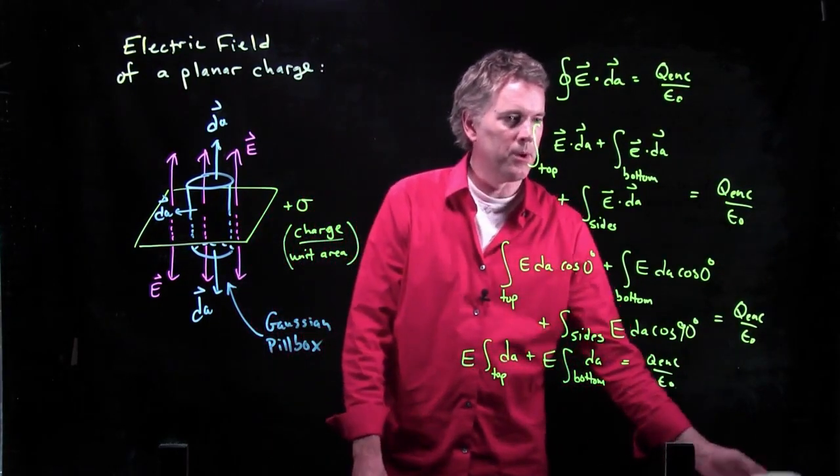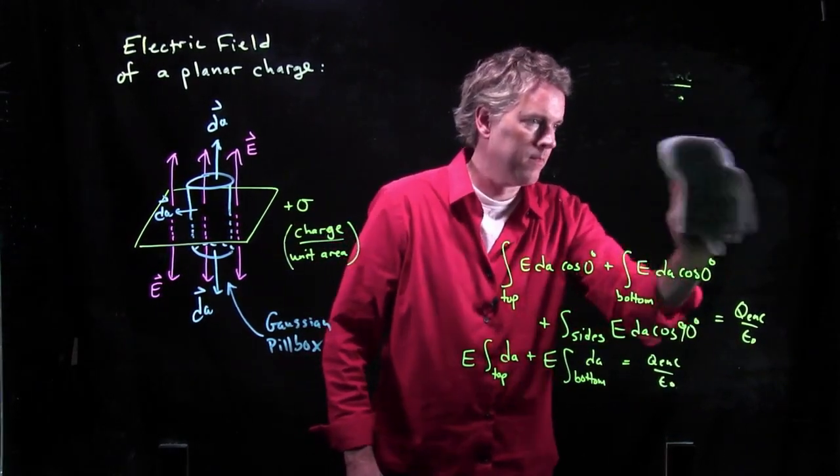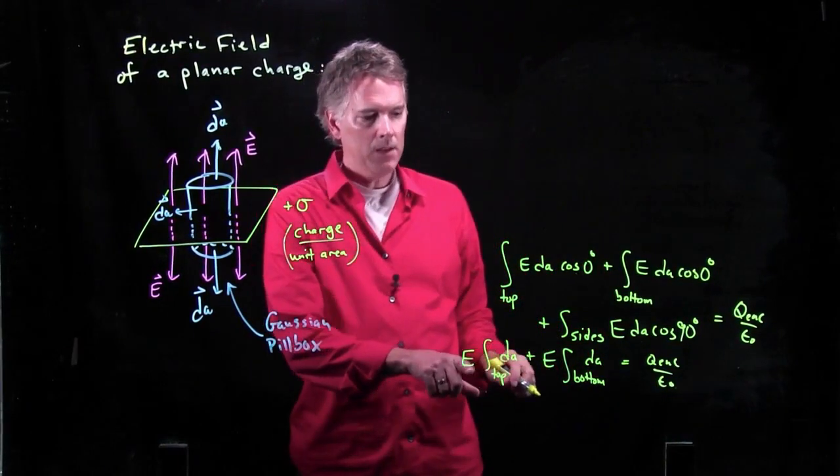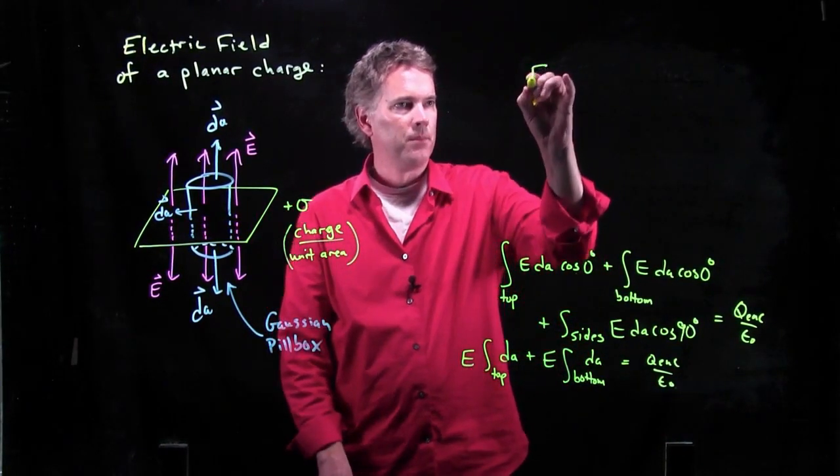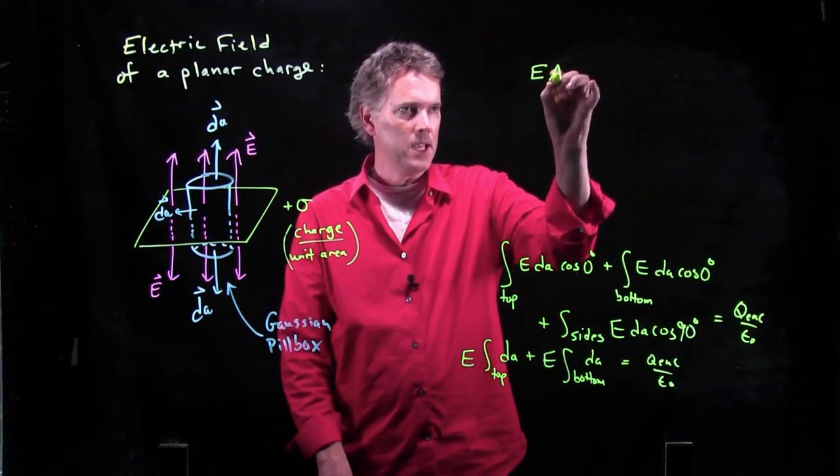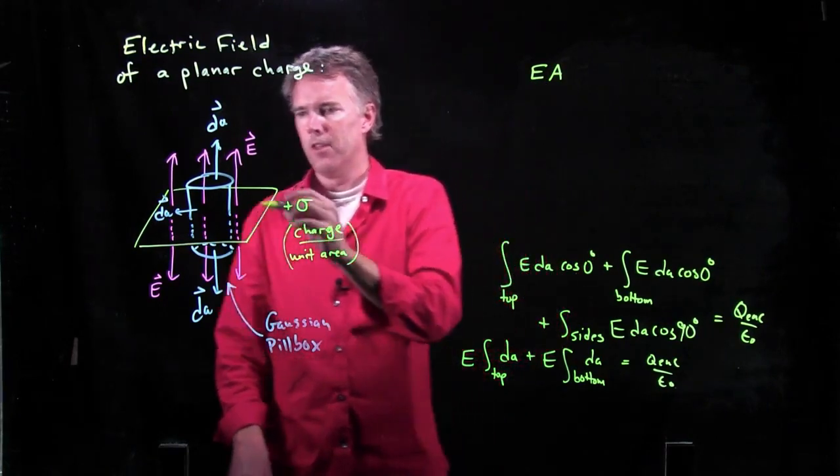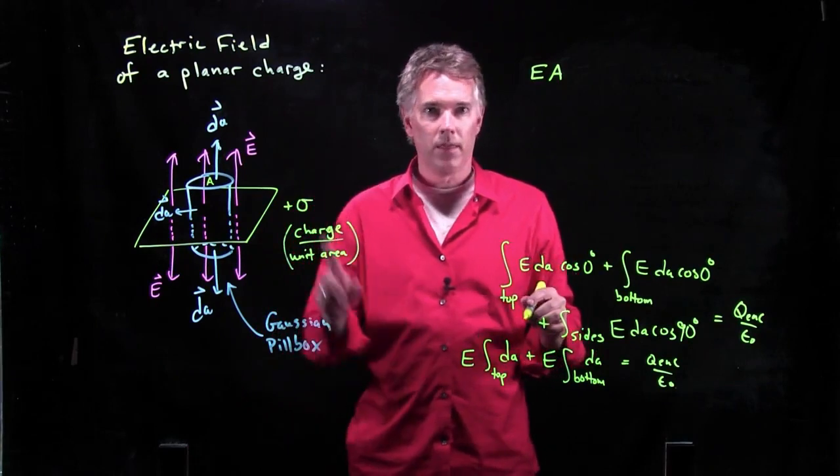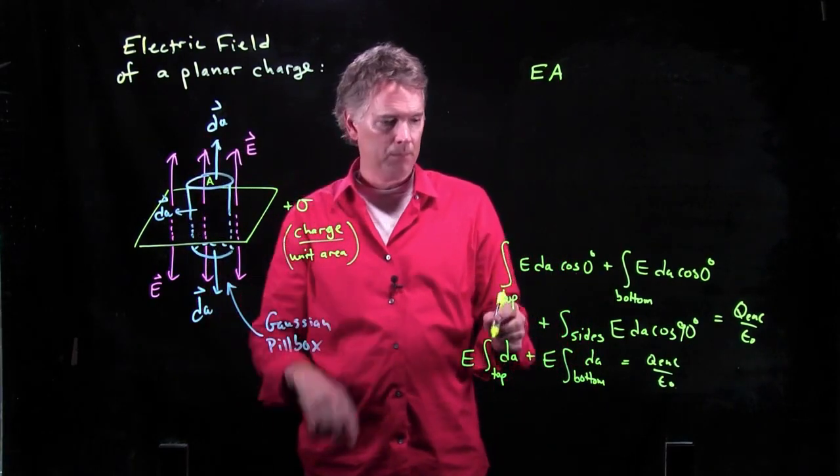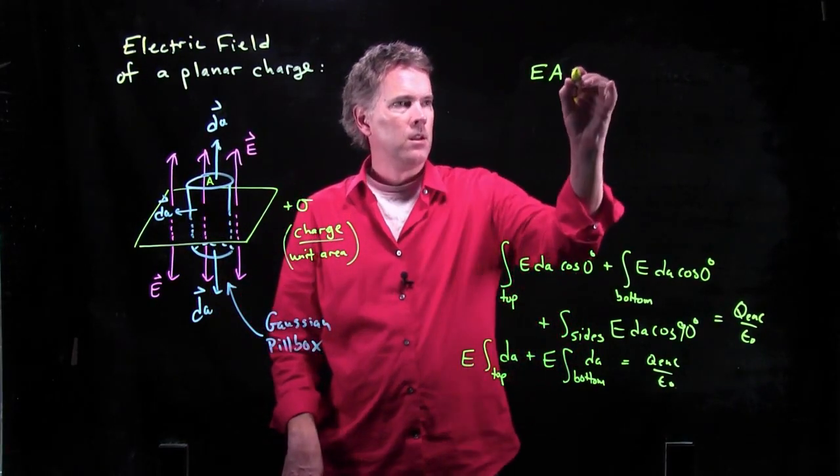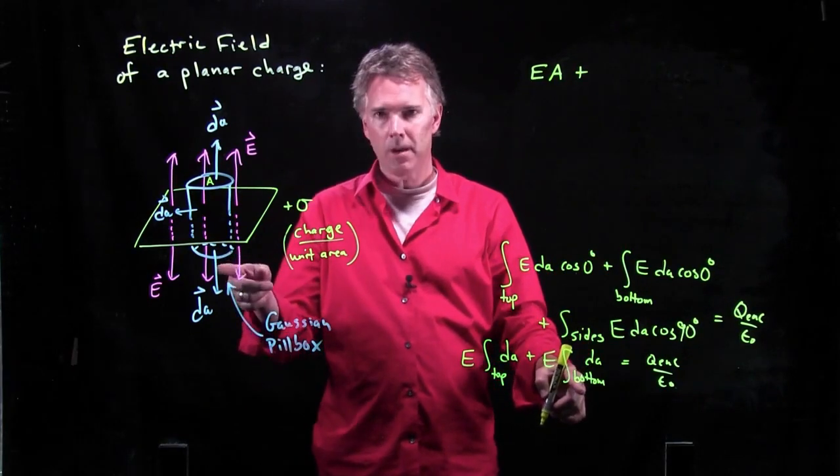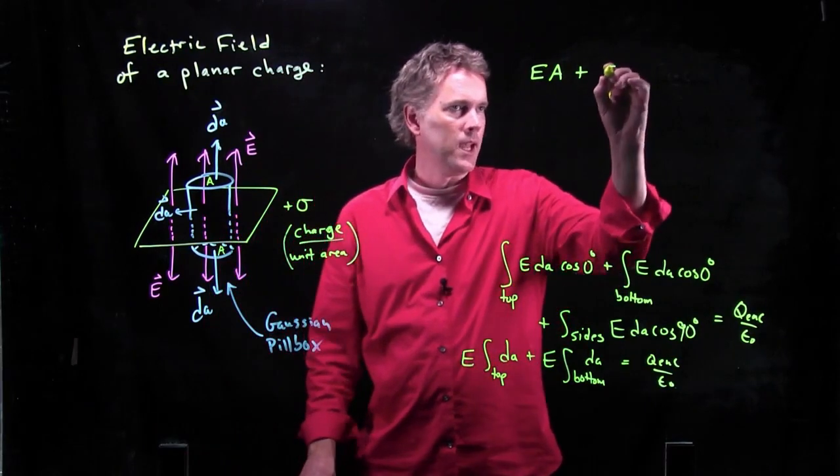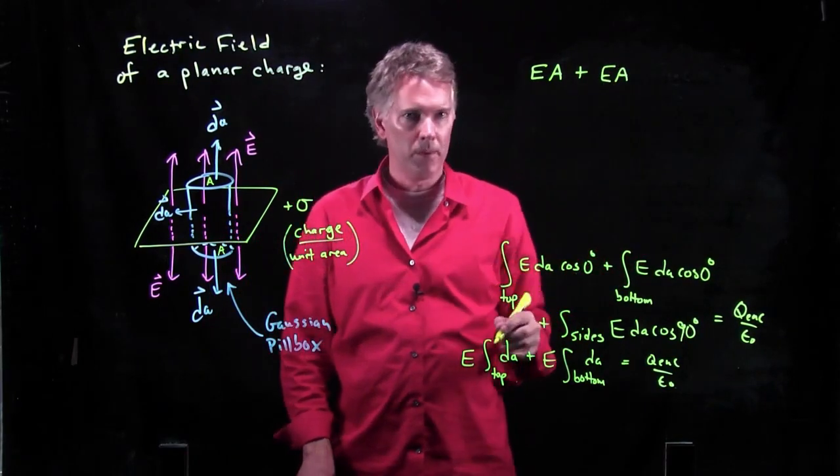All right. Let's make a little room up here at the top. And we'll go back up. E times the integral over the top. Well, that's just E times A. If this cross-sectional area is A, then the total area of the top is just A. What about the bottom? Well, the bottom is the exact same thing. That is also area A. And so we get E times A for the bottom.